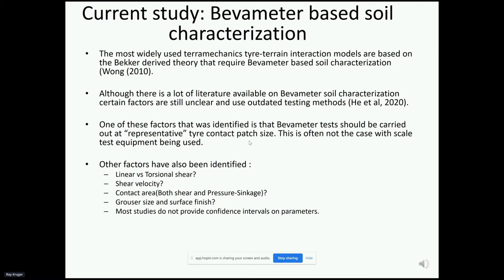Additional factors have also been identified: How does linear versus torsional shear compare? What is the influence of shear velocity? What is the influence of contact area — not just pressure — for both shear and pressure-sinkage? What about grouser size and surface finish? And most studies do not provide confidence intervals on soil parameters.